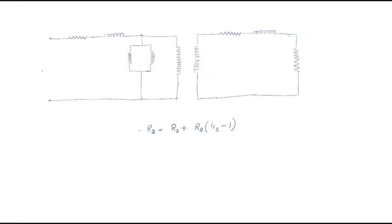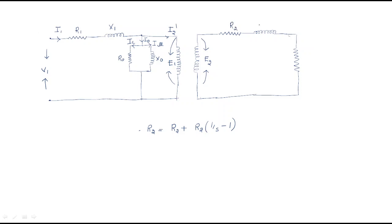V1 is the supply voltage that will be given, and it takes the current I1. The stator consists of resistance r1, reactance x1, and the core loss component IC or IL — no problem. This is the magnetizing current I_mu. It consists of r0 and x0, giving the combination of I0 and I2-dash current, with xm, and the induced EMF e1. Next, the induced EMF e2 consists of rotor resistance r2 and x2-naught. The load value equals r2 into (1/s minus 1).